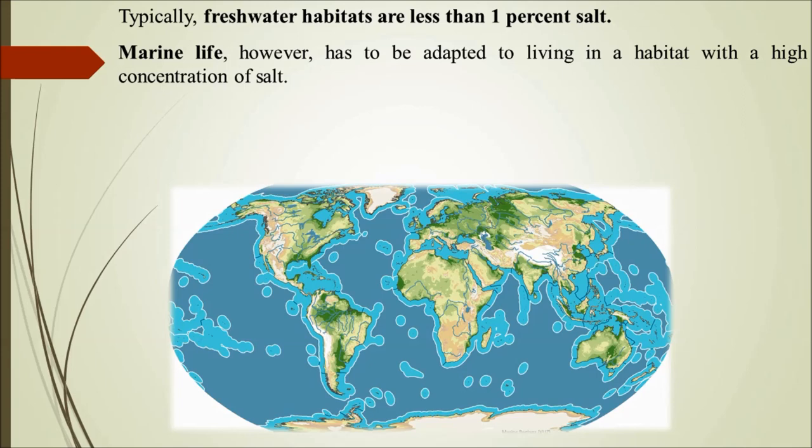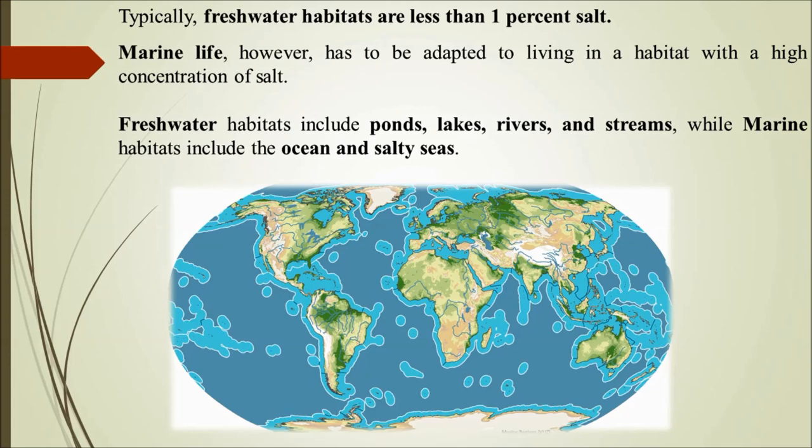Freshwater habitats include ponds, lakes, rivers, and streams, while marine habitats include oceans and all those salty marshy areas. Now let's go ahead and understand other characteristics.